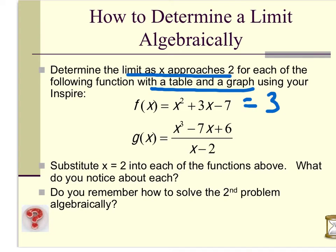I'm going to show that with a graph and a table in a second. For g of x, notice when I plug x equals 2 in there, I get 2 cubed minus 7x plus 6, which turns out to be 0, divided by x minus 2, which is also 0 — and there is that indeterminate form again. Remember, indeterminate form means there is an answer; I just have to use a different method.